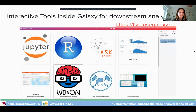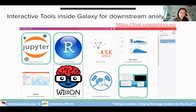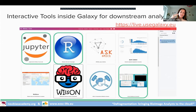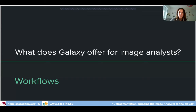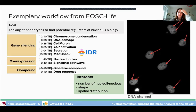It is also possible to have interactive notebooks in Galaxy. There are interactive tools available at live.usegalaxy.eu — I particularly highlight Jupyter notebooks, RStudio, and virtual desktops — and these are tracked in your history panel, making them useful for pre-processing or post-processing steps within a Galaxy workflow.